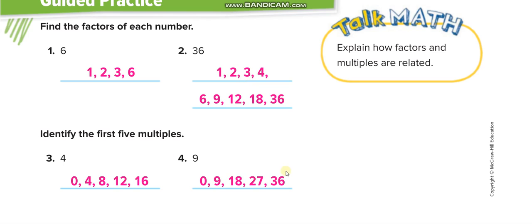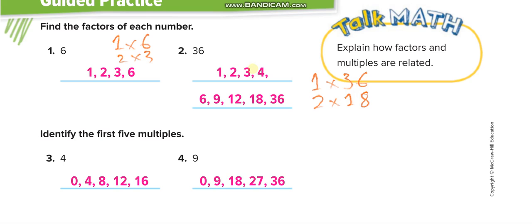Now find the factors of each number. For 6: 1×6 and 2×3. No other pairs give 6, so the factors of 6 are 1, 2, 3, and 6. Similarly for 36: 1×36, 2×18, 3×12, and 4×9. So the factors of 36 are 1, 2, 3, 4, 9, 12, 18, and 36.